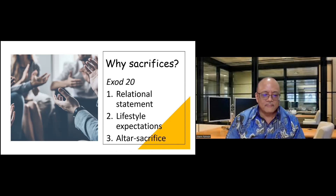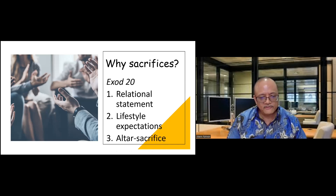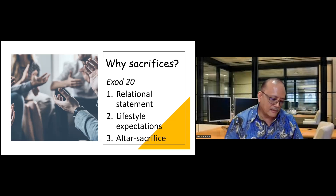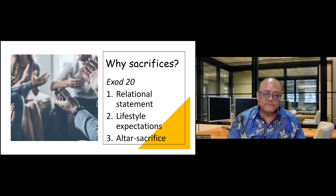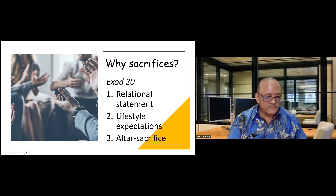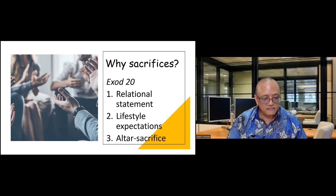God asked Moses to build an altar and offer sacrifice. It took a long while of research and contemplation to figure out the reason for that altar. Exodus 20 has three parts: the relational statement, the lifestyle expectations, and this altar-sacrifice nexus. When studying the sanctuary more fully, it became clear that the primary reason for the altar is the compensation for human failure. God has made us his people, given us his expectations, but we will fail. When we fail, there is the compensation — the contingency. This is the only reason sacrifices were asked of Israel: a reminder that no matter what you do, no matter how much you fail, God keeps a way for us to stay connected with him.